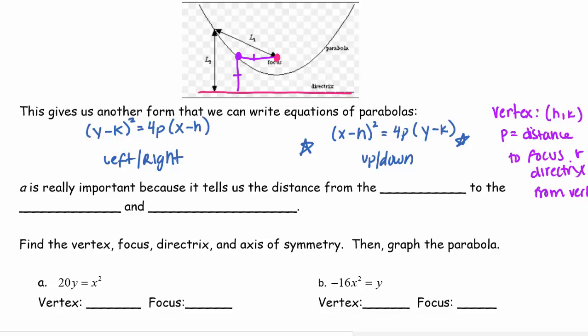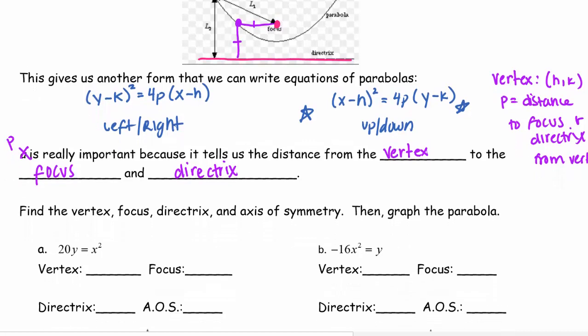And that's very important. Instead of a, I want you guys to cross it out and write p. P is really important because it tells us the distance from the vertex to the focus and directrix. That's how important it is, we wrote it down twice. That p value is super important.